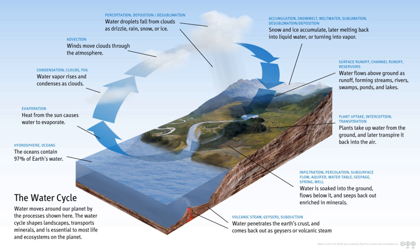The water cycle is powered from solar energy. 86% of the global evaporation occurs from the oceans, reducing their temperature by evaporative cooling. Without the cooling effect of evaporation on the greenhouse effect, surface temperatures would be much higher at 67 degrees Celsius. Aquifer drawdown or overdrafting and the pumping of fossil water increases the total amount of water in the hydrosphere, and has been postulated to be a contributor to sea level rise.